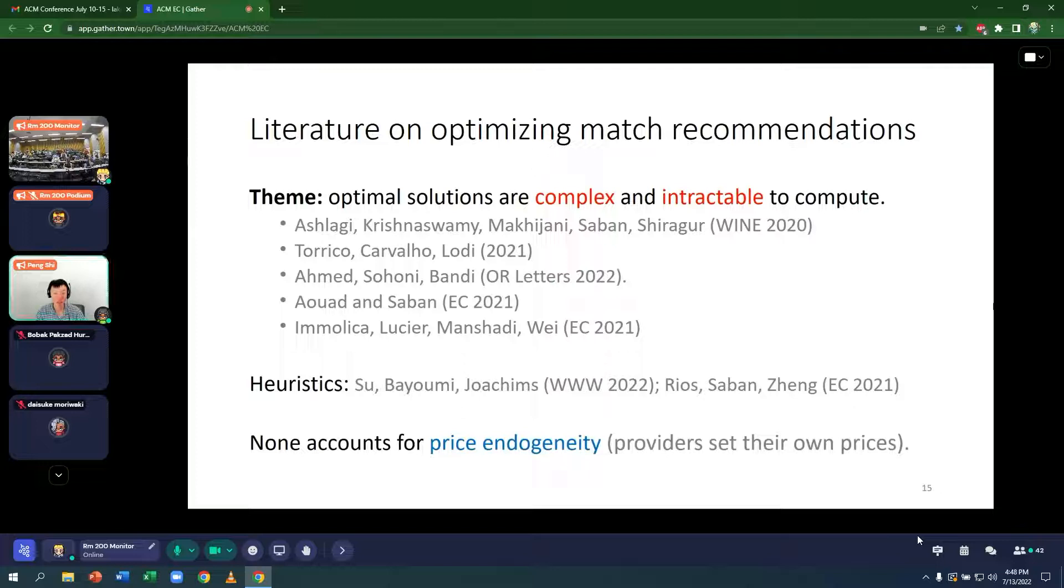None of these papers account for price endogeneity, which means providers set their own prices. This is important for markets like home services, where these contractors set their own prices outside of the platform's control. And accounting for this is important, but could potentially even make the problem more complex.